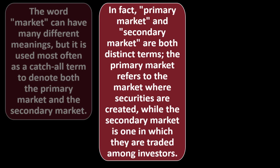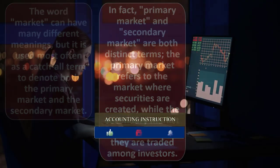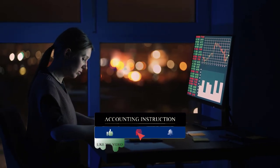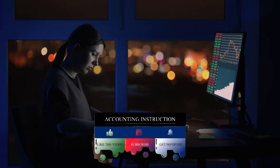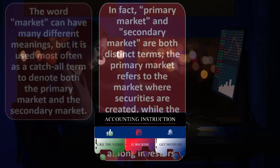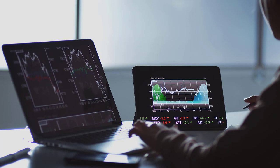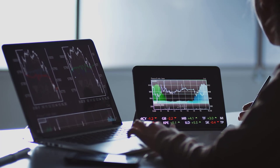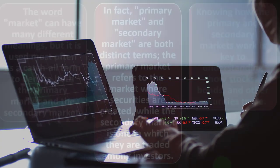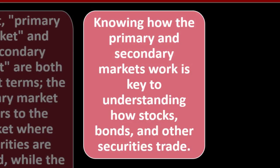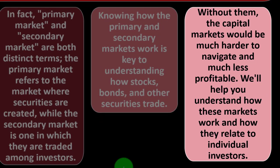In fact, primary market and secondary market are both distinct terms. The primary market refers to the market where securities are created, while the secondary market is one in which they are traded among investors. The primary market typically involves the company itself looking for financing, possibly issuing stocks or bonds. Knowing how these markets work is key to understanding how stocks, bonds, and other securities trade — without them, capital markets would be much harder to navigate.